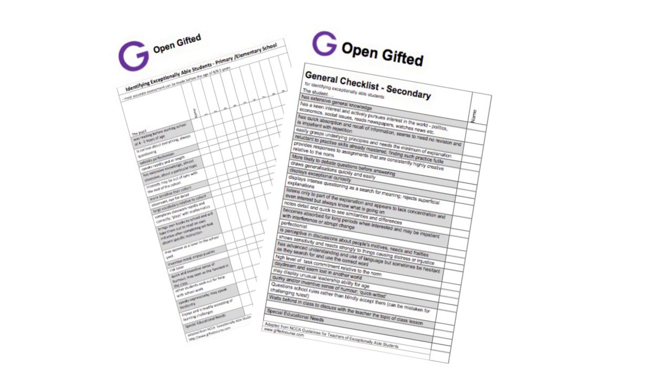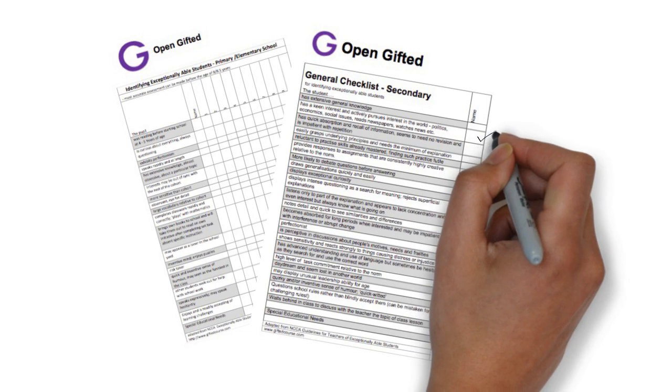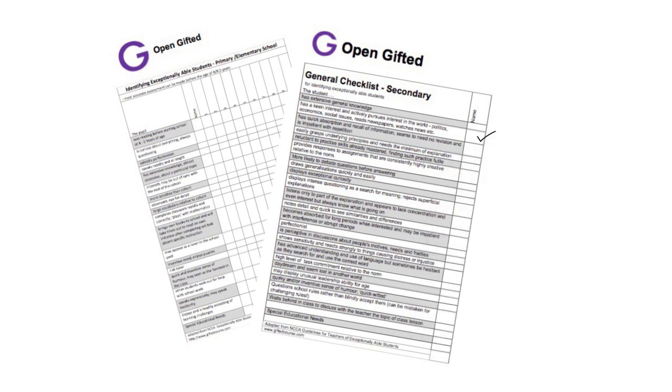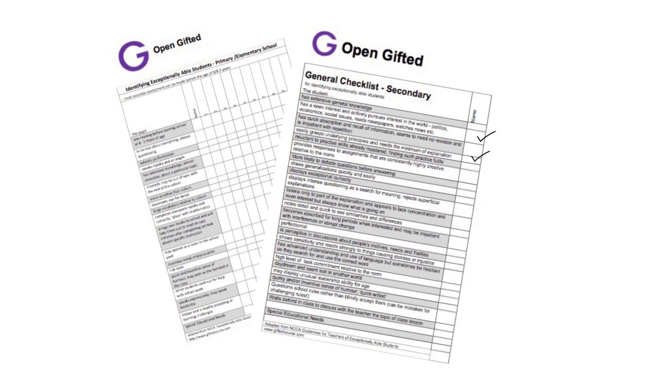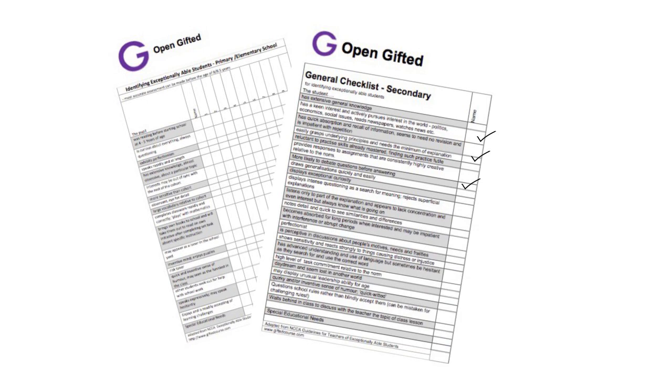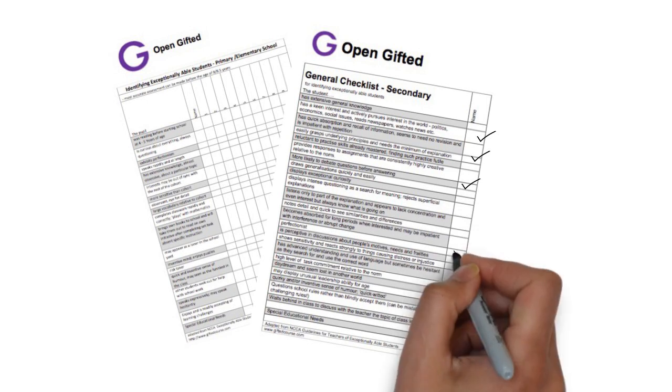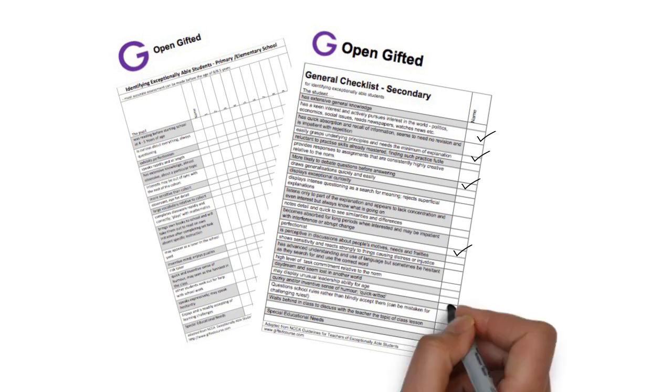Below this video, there are a number of links which will provide you with a series of observation forms which you can use in several subjects or which you can share with colleagues. The lists are not exhaustive and they shouldn't be used on their own, but rather in conjunction with other identification procedures. There is a general checklist for primary school, a general checklist for secondary schools and an Excel file with checklists for several subjects. Some of these have been adapted from the NCCA guidelines for teachers of exceptionally able students and they also include reference to my own experience teaching gifted children.